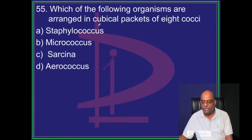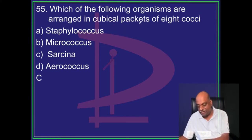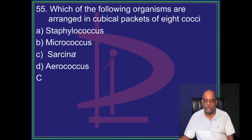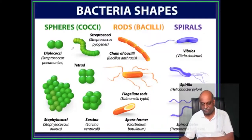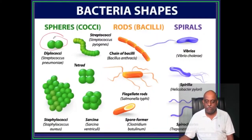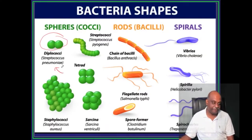Which organism is arranged as cubical packets of 8 cocci? Sarcina. So you have diplococci like Streptococcus pneumoniae.